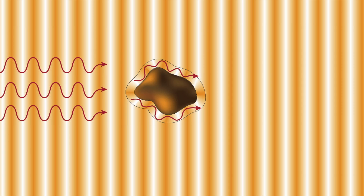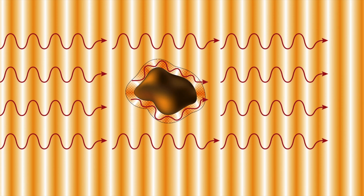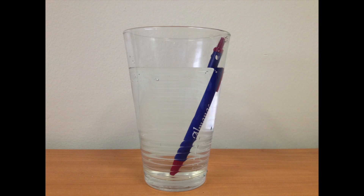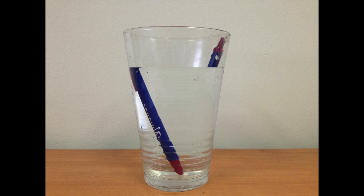Can we make an object invisible? What if we design a man-made material that cloaks an object? In other words, it bends an incoming wave around it without being scattered, so we don't see the object. When the light passes through water, it bends in one direction. Can we make an artificial medium that bends the wave the other direction?